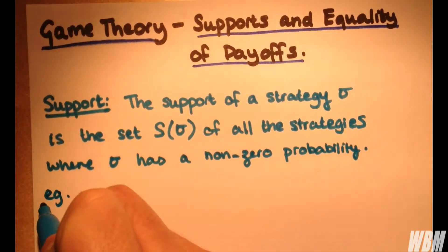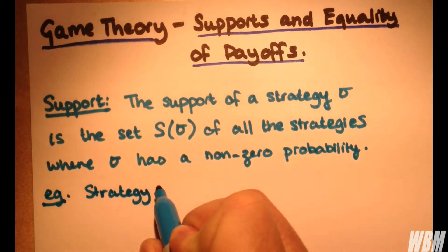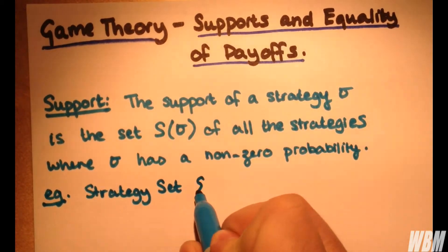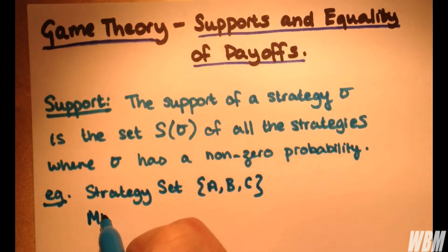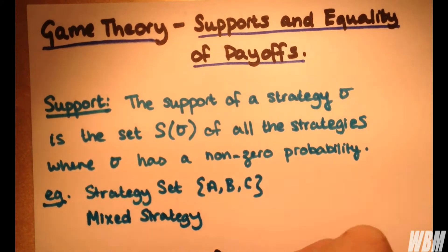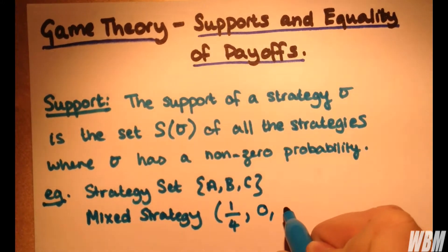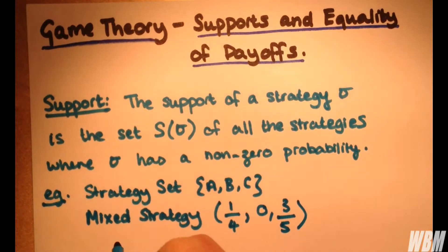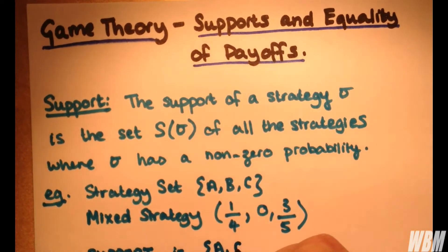A quick example: if we have a strategy set {A, B, C} and a mixed strategy where we have values of 1/4, 0, and 3/5, quite straightforward. The support of the strategy is the set {A, C}.